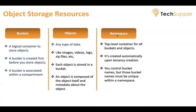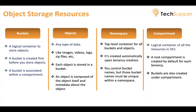A namespace is a top-level container for all buckets and objects. When you create your account, Oracle creates a unique, system-generated, and immutable namespace unique to your tenancy. The namespace spans all compartments within a region, so we can say namespace is a global resource. We can control bucket names, but those bucket names must be unique within a namespace. Compartments are logical containers for all resources in OCI — every resource is part of a compartment. A root compartment is created by default for each tenancy.